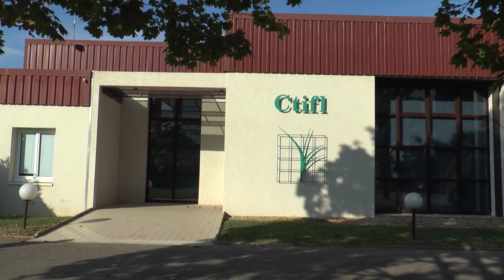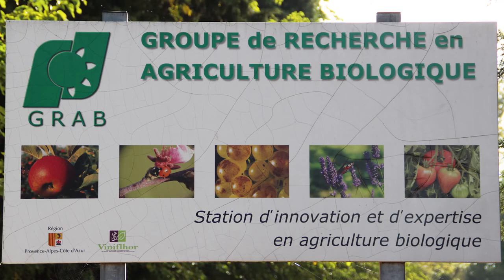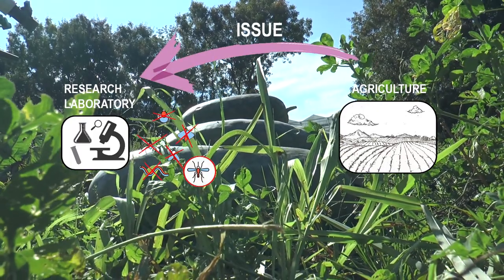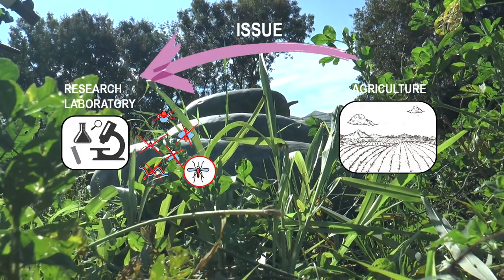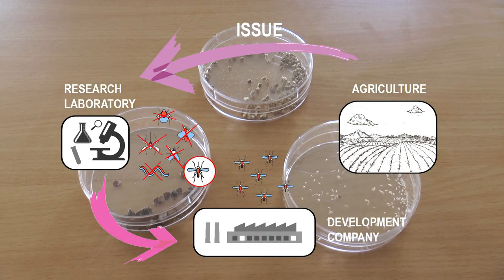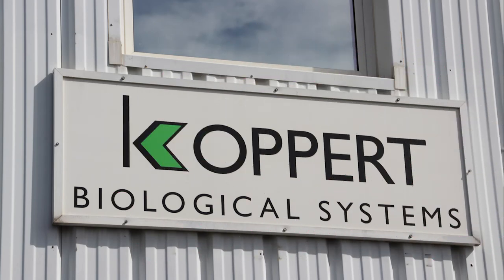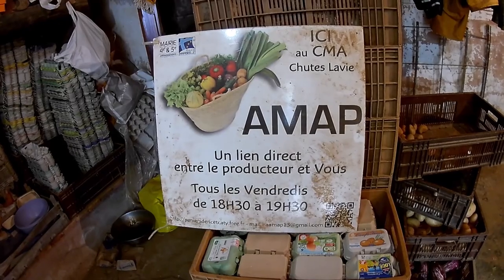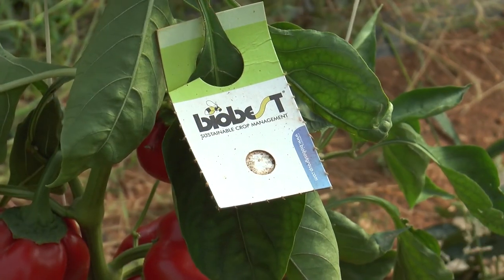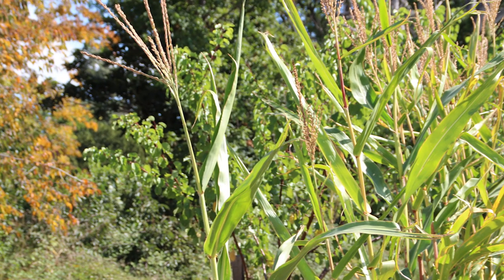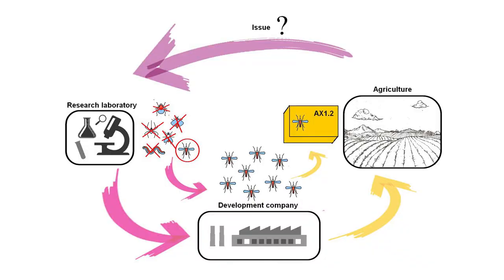Some laboratories are specialized in this field. Taking an agricultural problem as a starting point, they select the best auxiliary. Then they provide this selection to a company specializing in auxiliary multiplication. Farmers buy the company's product to use it on their fields. Therefore, they can decrease pest damage and the loop is completed.